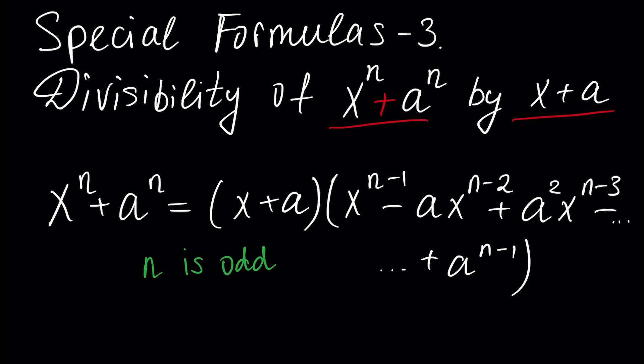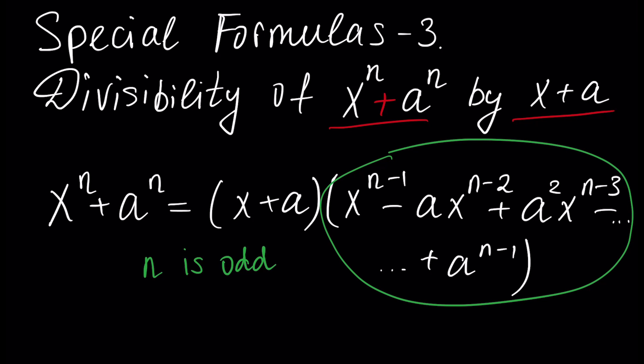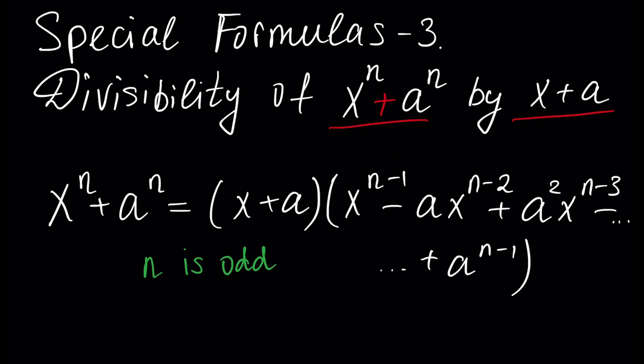In this video tutorial, we will learn special formulas. This is part 3 of our tutorials on divisibility of binomials. We will learn whether the binomial x to the power n plus a to the power n is divisible by x plus a. We will use Bezout's theorem to prove it, and the result or quotient of this division will be another polynomial with degree n minus 1. Like and subscribe, and let's get started.